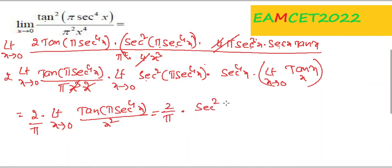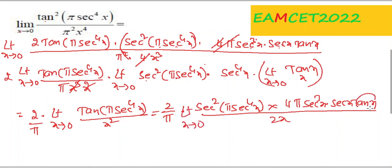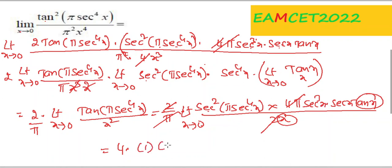Differentiating again: sec²(π·sec⁴x) · 4π·sec⁴x · sec x · tan x over 2x. Using tan x/x → 1 and sec x → 1, the 2s cancel and π cancels. The result is 4 · 1 · 1 · 1 = 4, which is the required answer.